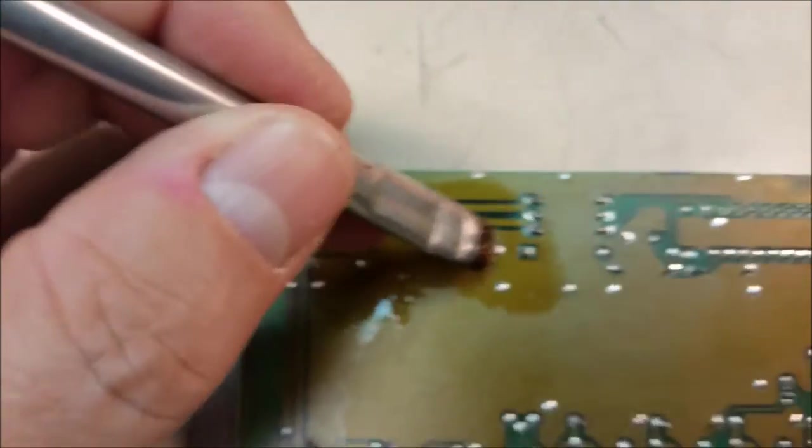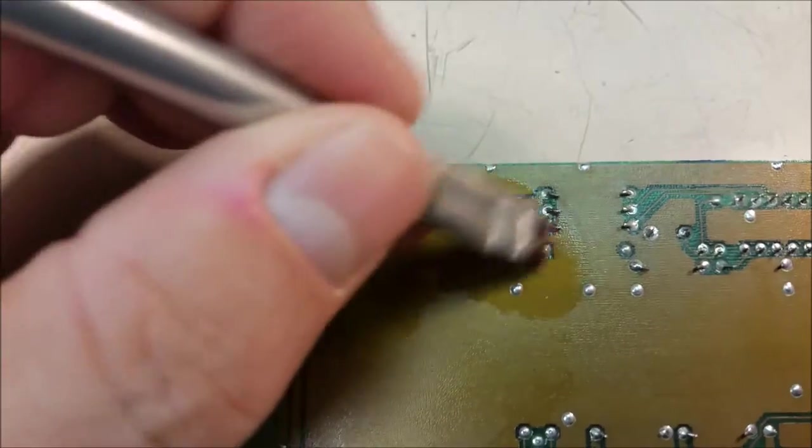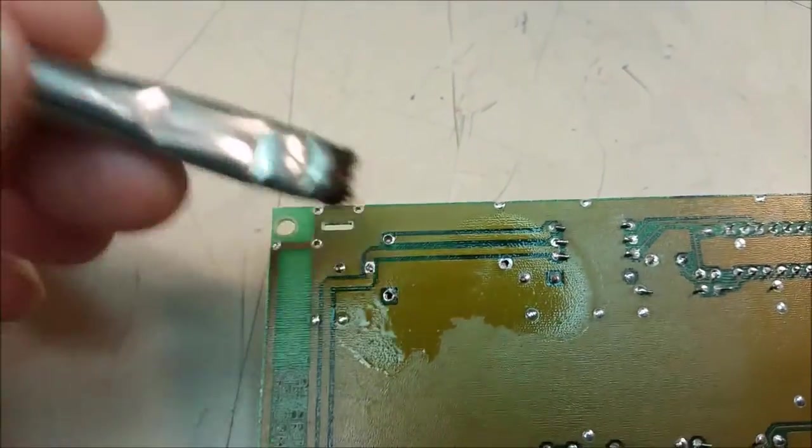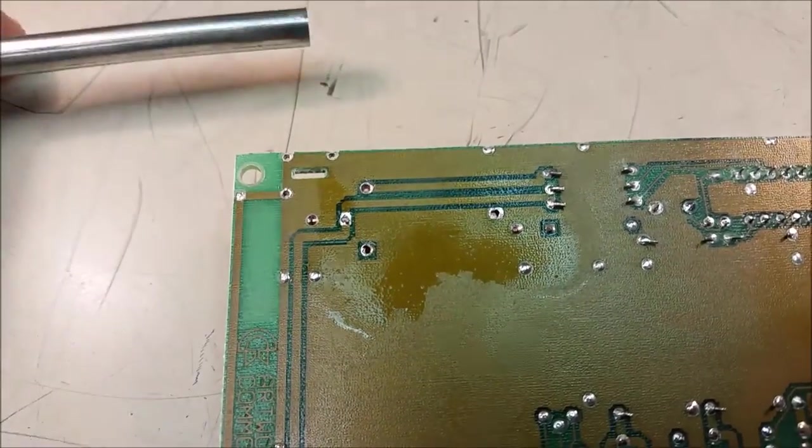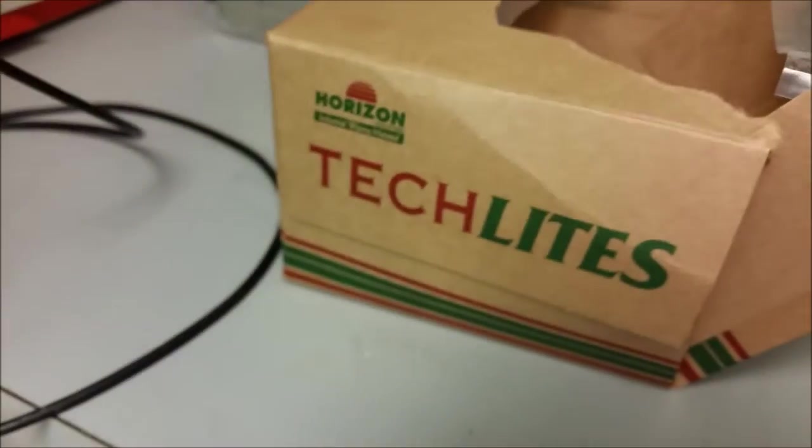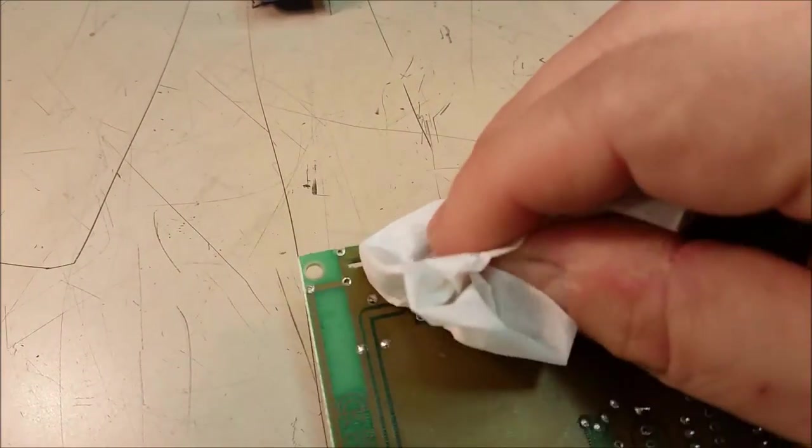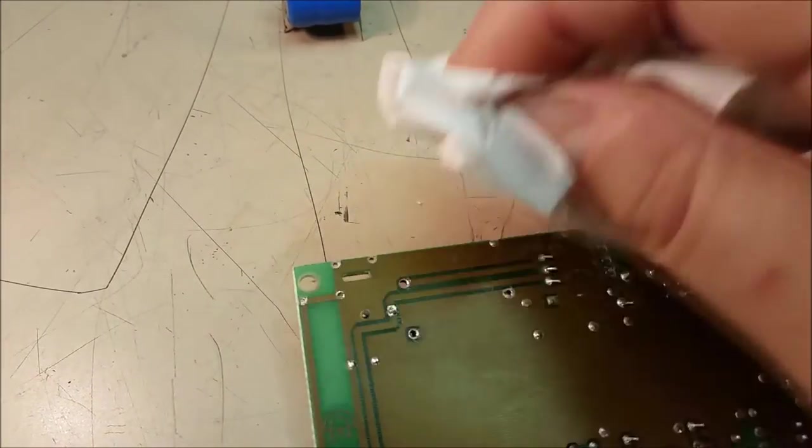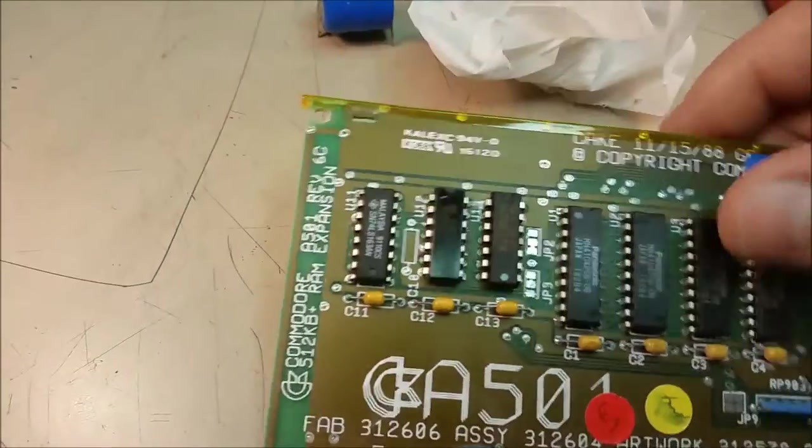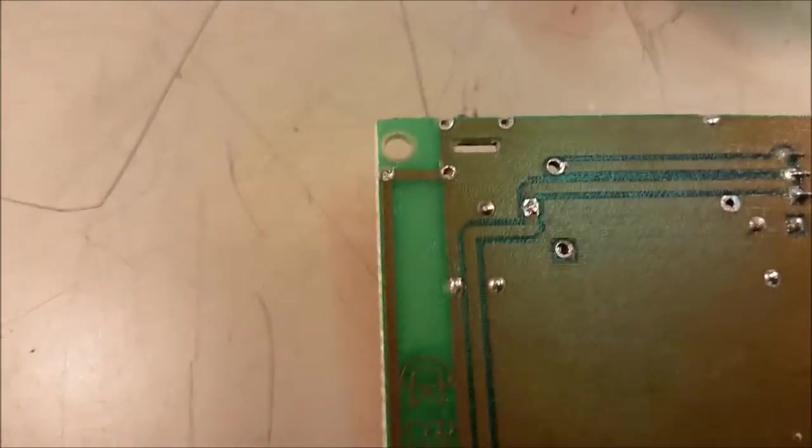We use IPA 100% at work, but 70% or 91% you can buy off the shelf usually works pretty good too. A little bit of Kim wipes or tech wipes right here. We use these things all the time. The box was ripped open because it was down to the bottom and they don't like to come out, so I always just rip it open and start grabbing from inside. We got this side done.